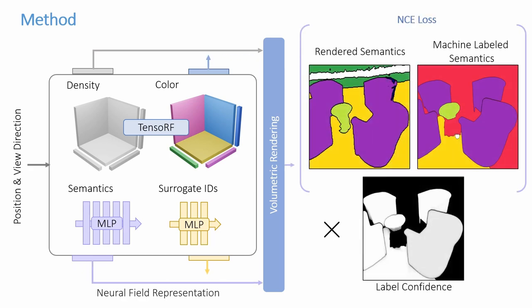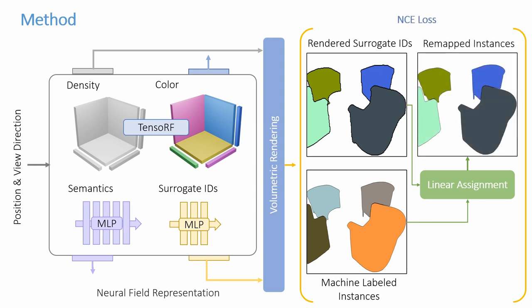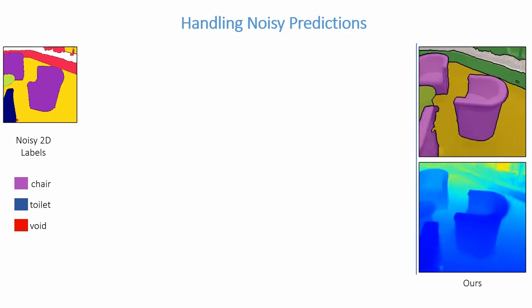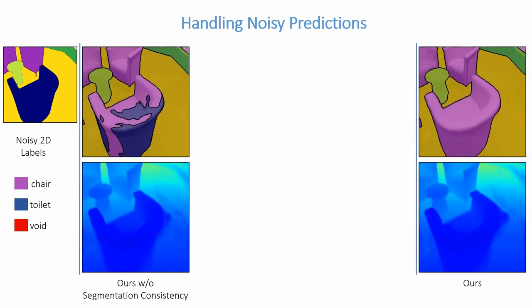For semantics, we use a normalized cross-entropy loss on rendered class probabilities and the machine-generated class predictions, weighted by the confidences obtained by using test-time augmentations on the 2D segmentation network. Instances cannot be directly used for supervising the 3D surrogate IDs and are first mapped to them using a linear assignment where the cost is based on the model's current predictions and the machine-generated instance labels. We further take several steps to handle the inherent noise present in machine-generated labels, each of which is crucial for obtaining clean and consistent 3D segmentations.